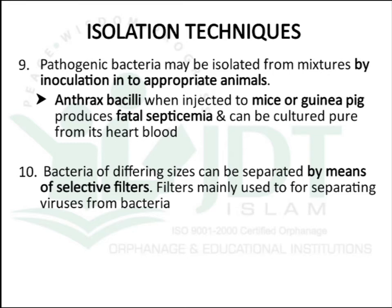The ninth method: pathogenic bacteria can be isolated from a mixture by inoculating into appropriate animals. For example, anthrax bacillus when injected into mice or guinea pigs will produce fatal septicemia, and it can then be cultured pure from the heart blood.